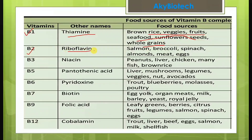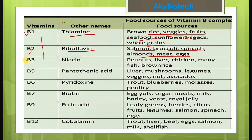Vitamin B2 — riboflavin. Please remember the other names because sometimes examination questions use the alternate name instead of the vitamin number. Food sources include salmon, broccoli, spinach, almonds, meat, and eggs.